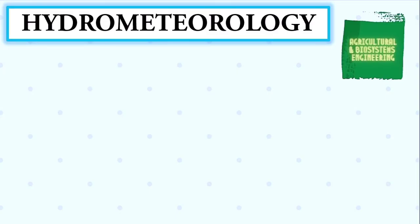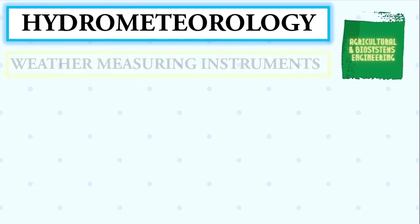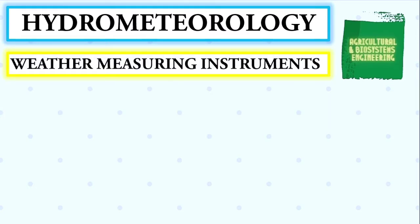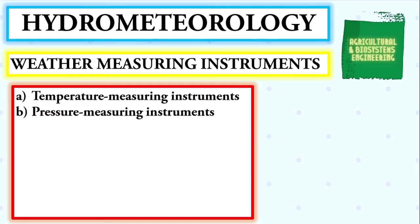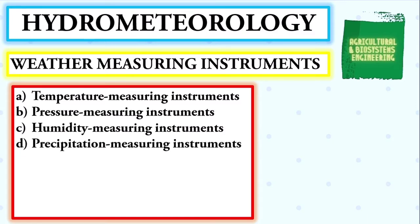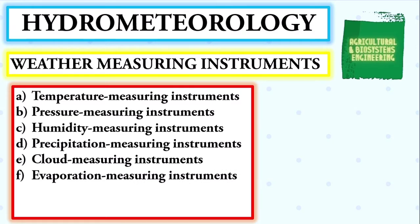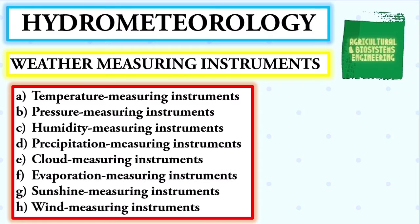Welcome to another tutorial video regarding hydrometeorology. This time I will show you the different weather measuring instruments used even up to these days. These instruments are classified into the following categories: temperature measuring instruments, pressure measuring instruments, humidity measuring instruments, precipitation measuring instruments, cloud measuring instruments, evaporation measuring instruments, sunshine measuring instruments, and wind measuring instruments.